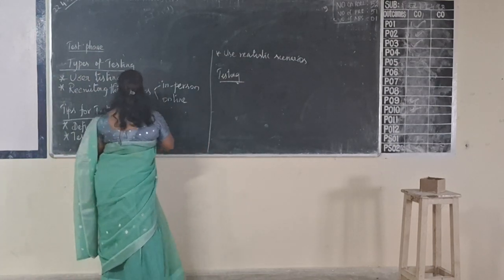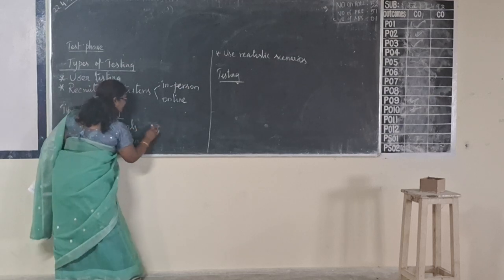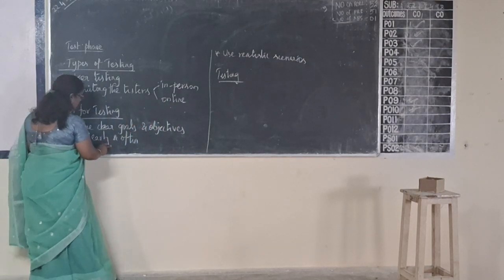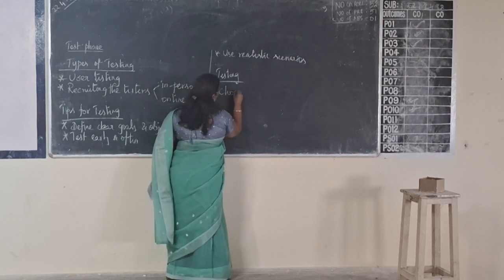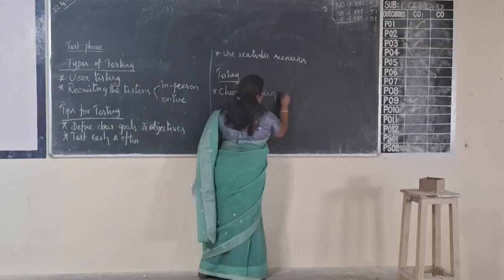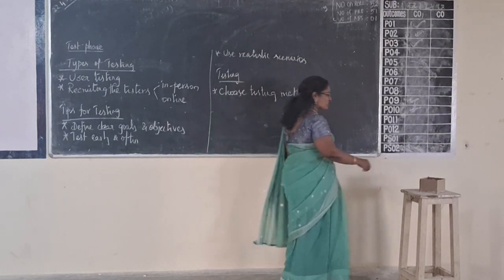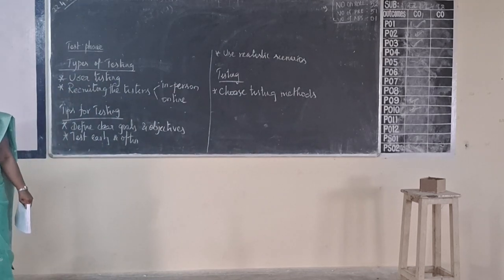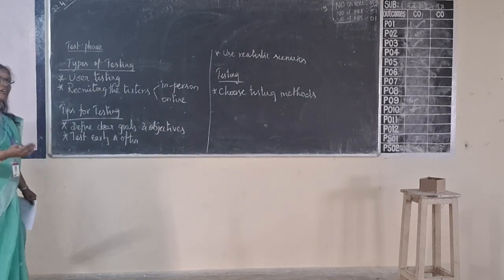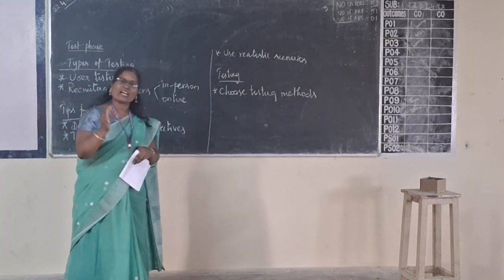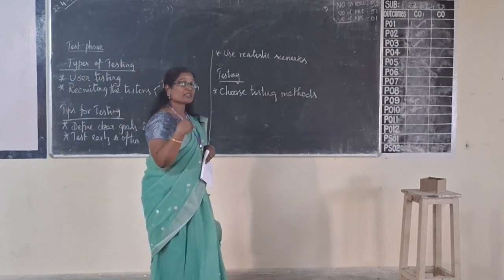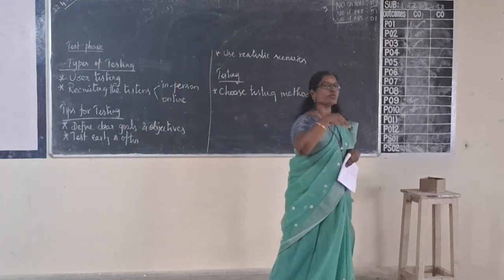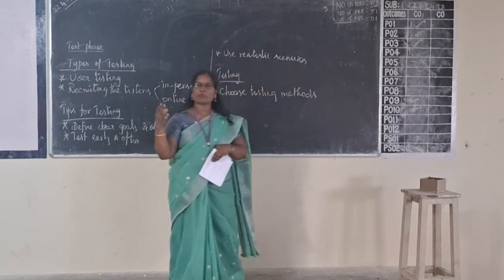Now the steps to follow while doing a test. First, define testing goals and objectives. Second, choose a testing method — there are many ways: survey, interview, workshop. You can call people in person, or do it through video conferencing. The survey or interview form can be forwarded through WhatsApp, Facebook, or Instagram.